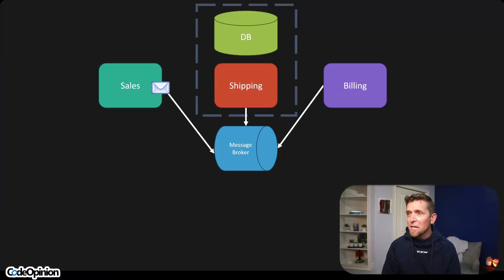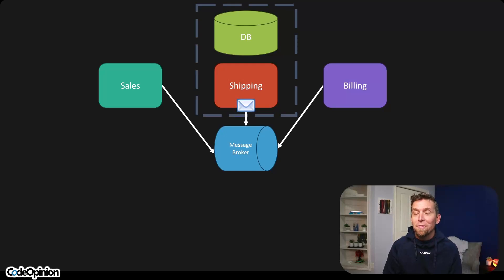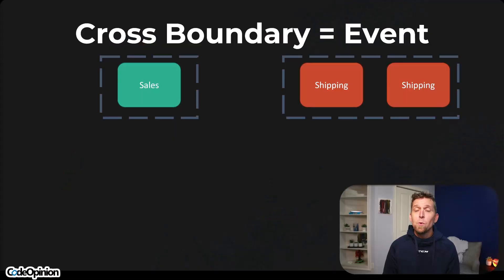To jump over to the diagram: an OrderPlaced event occurs, an OrderBilled event occurs, we consume both of those, then we process a command locally within that boundary. To answer the question — where does code live that needs to deal with that workflow? It exists within the boundary that actually needs to do something.